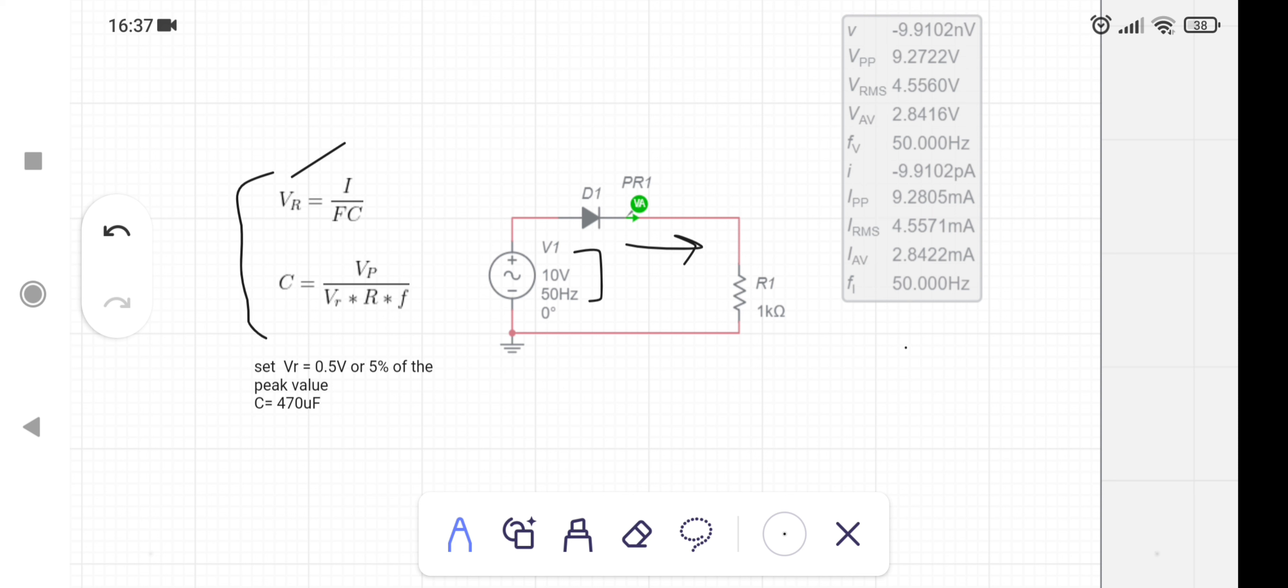Ripple voltage is acceptable up to 20% of the peak value, and usually ripple voltage is set at VR = 0.5 volts.